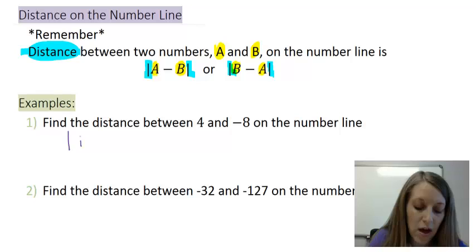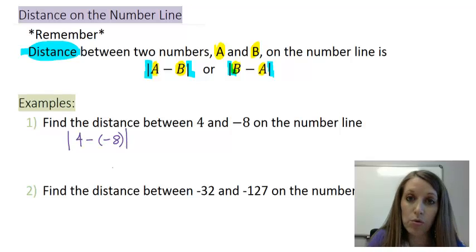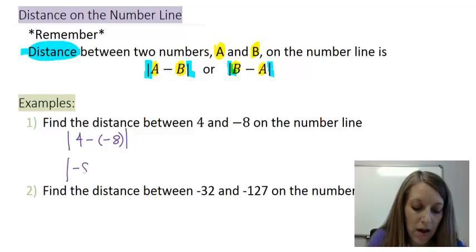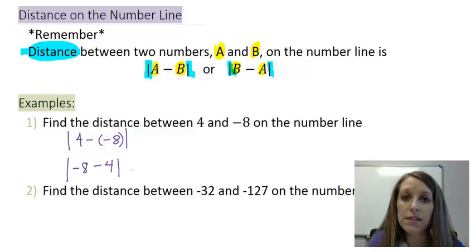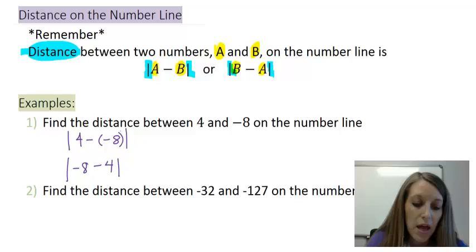So I can do it as the absolute value of 4 minus -8, just don't lose the double negative, or I could do it as the absolute value of -8 minus 4. And let me prove to you that both of these get the same answer.